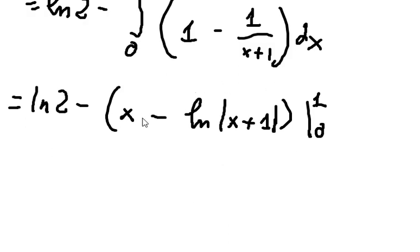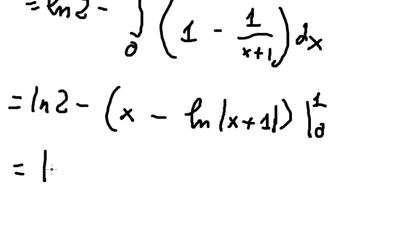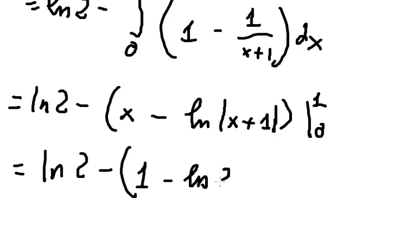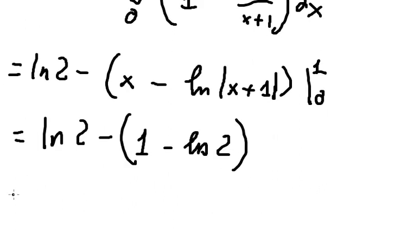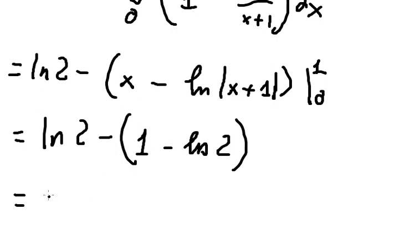Putting number one here and number zero here, so f(2) — negative and negative gives us positive — and that is about 2·f(2) minus f(1). This is the end, thank you for watching.